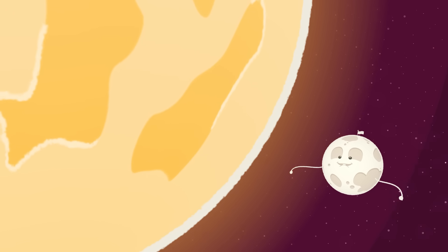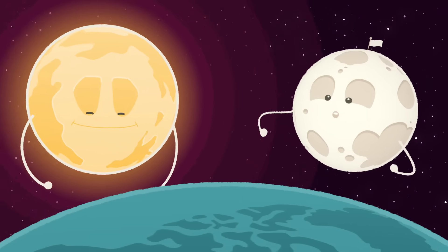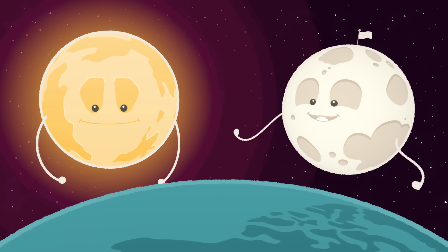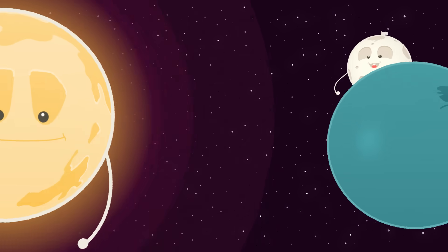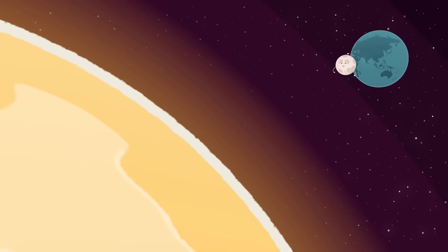My pal Sun here is about 400 times bigger in diameter than myself. But to you tiny Earthlings, we appear about the same size. That's because Sun is 400 times farther away from Earth than I am.